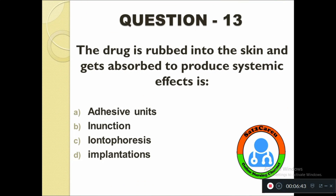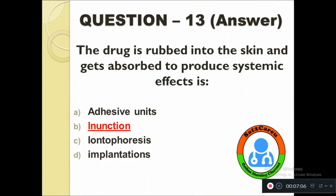Question number thirteen: The drug is rubbed into the skin and gets absorbed to produce systemic effects. Option A: Aggressive unit, B: Inunction, C: Iontophoresis, D: Implantations. The correct answer is Inunction.